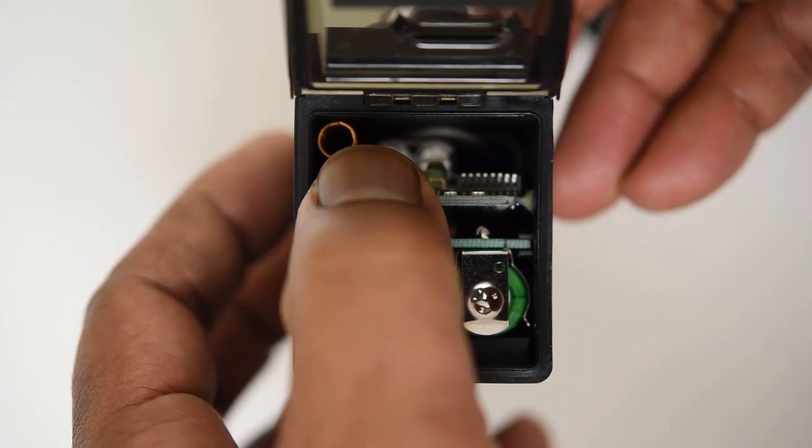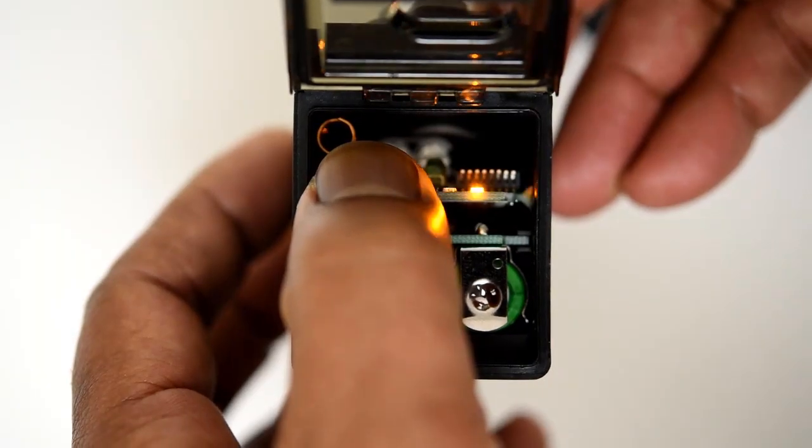Now we're going to bind the Q45 wireless node to the controller. First power up the unit by holding down the power button until the amber LED turns on.